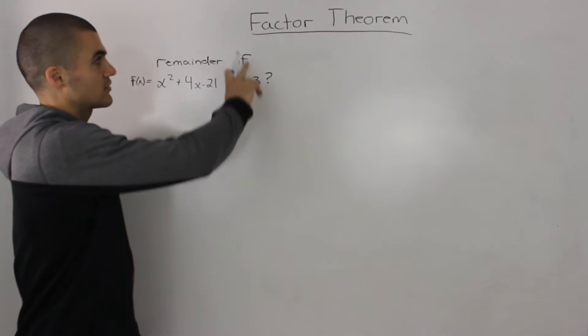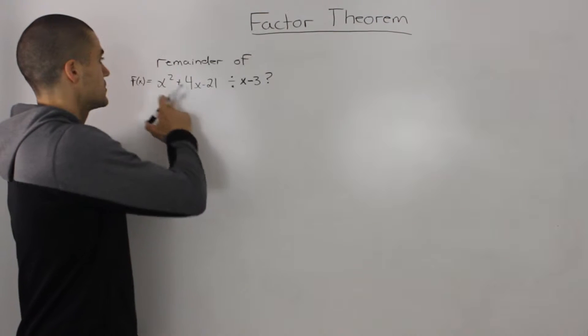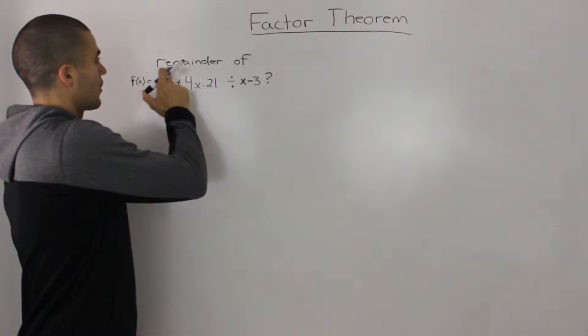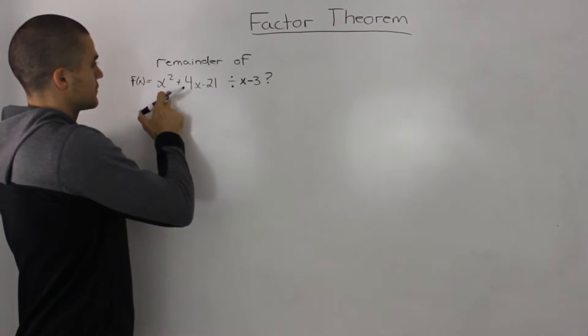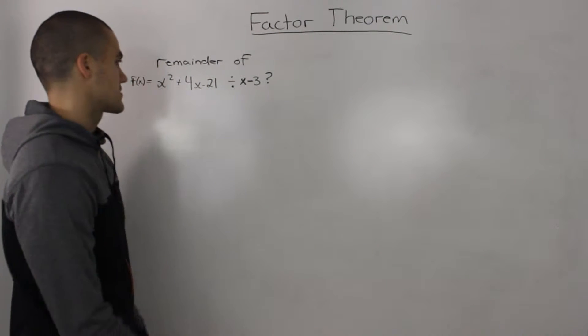In this video, we're going to talk about the factor theorem for polynomials. To start off, let's do this simple example where we have to find the remainder when f(x) = x² + 4x - 21 is divided by x - 3.